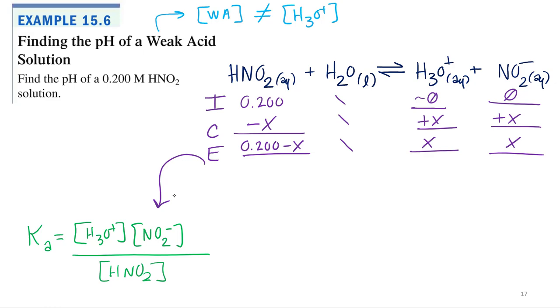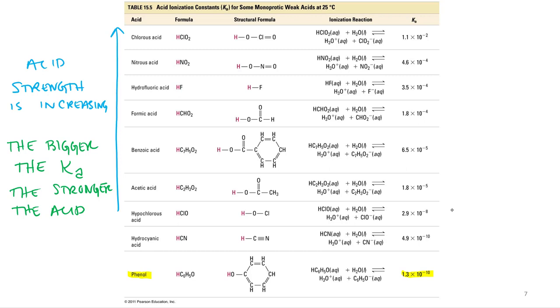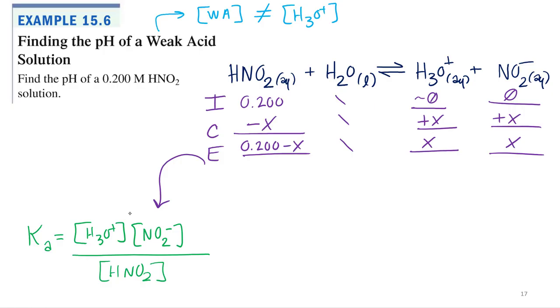I'm going to need to know the Ka for this acid, so let's go look that up. Nitrous acid, HNO2, 4.6 times 10 to the negative 4th. So Ka equals 4.6 times 10 to the negative 4th.